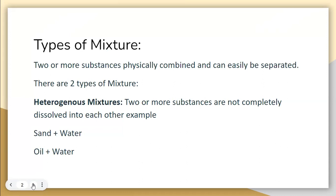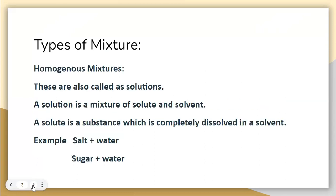There are two types of mixtures. The first is a heterogeneous mixture — a mixture in which two or more substances never dissolve into each other and you can clearly see them floating, or there is a clear boundary of separation between them. For example, sand in water, or oil in water, where you can see a distinct layer of oil.